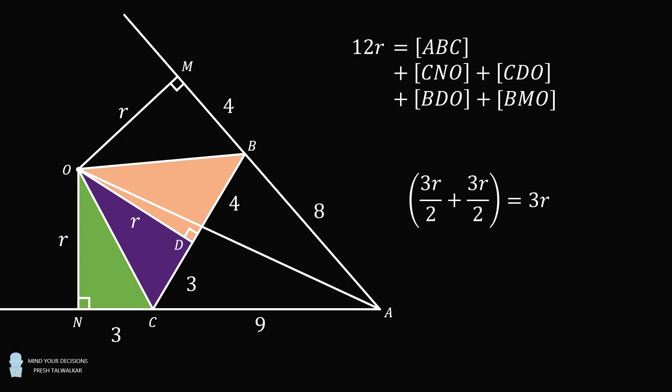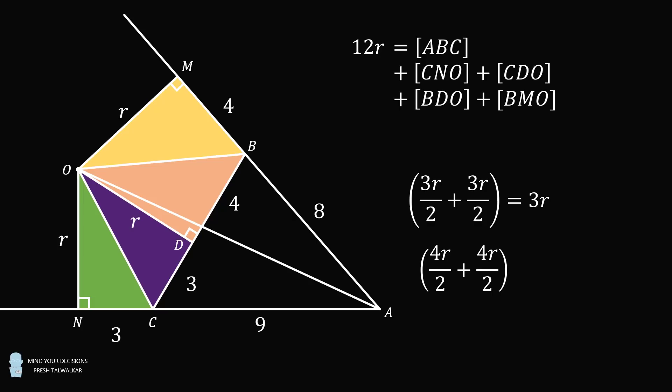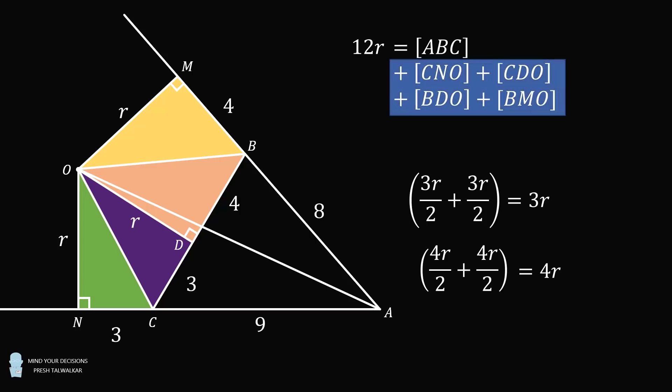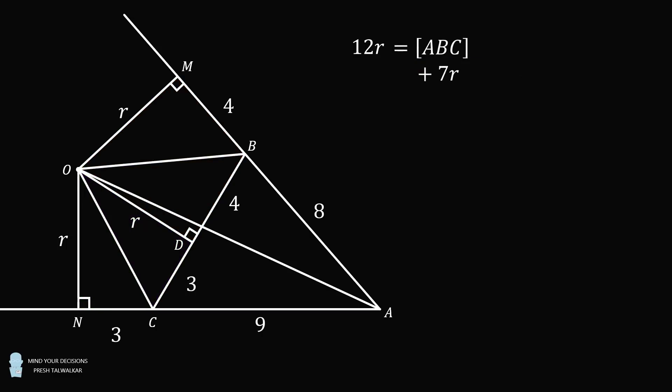Then, the area of triangle BDO is the same as the area of triangle BMO, and each of these has an area equal to 4R over 2. So, in total, their areas are equal to 4R. The total of all of these areas is equal to 7R. We substitute that into the equation. We have 12R is equal to the area of triangle ABC plus 7R. So, what's the area of triangle ABC?